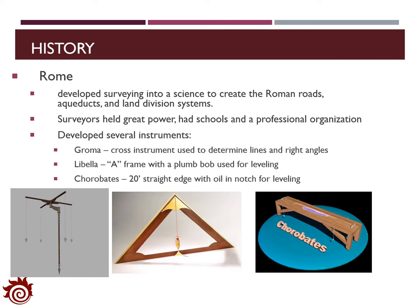When the time came to Rome, surveying became a science and was widely applied to construct roads, aqueducts, and land division systems. During that time, surveyors had great power and could hold their own schools and professional organizations. Many new survey instruments were also invented, such as the Groma — a cross instrument applied to determine lines and right angles, shown in the figure on the left. In the middle is the Libella, a frame with a plumb bob for leveling. The one on the right is a chorobates, also used for leveling.